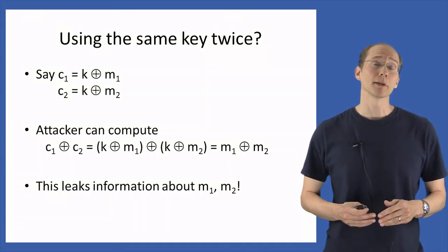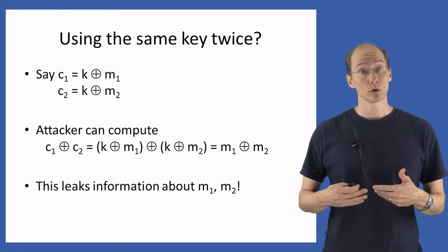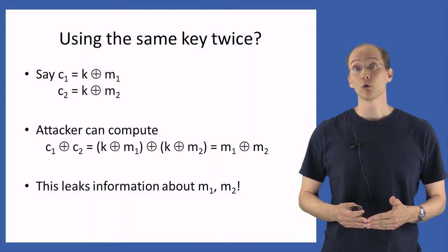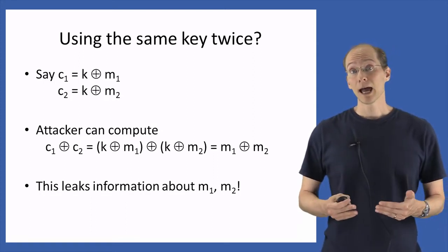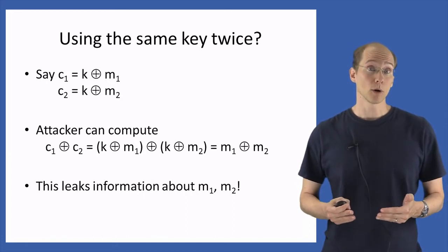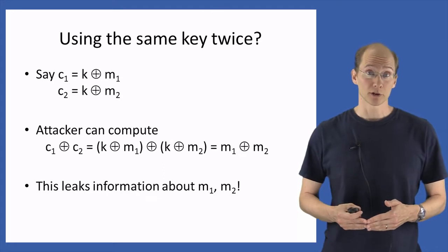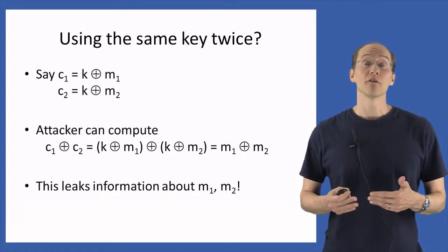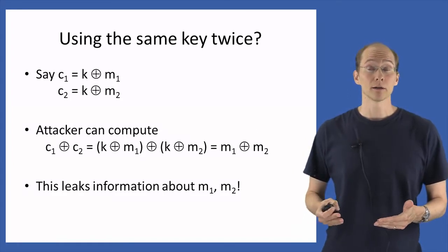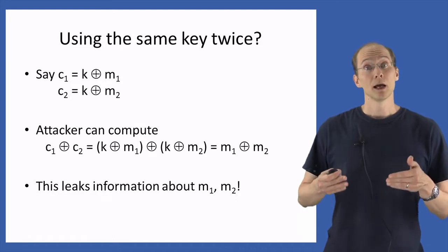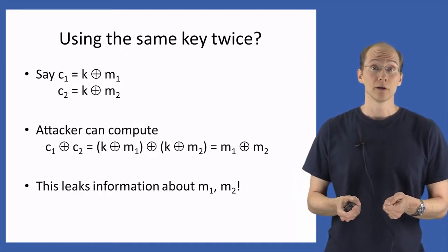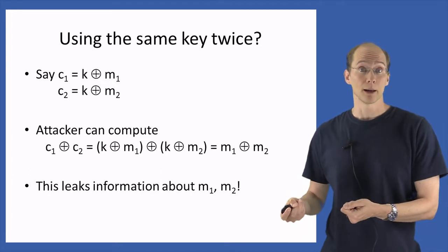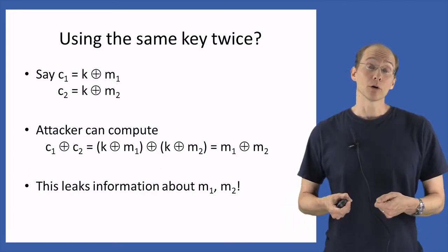I want to look in more detail at the problems that might arise in case the one-time pad is used to encrypt two messages using the same key. So let's say we have two parties who share a key K and use this key to encrypt two messages M1 and M2. An attacker who observes the two ciphertexts C1 and C2 can compute the XOR of those two ciphertexts, and by substitution that XOR is equal to the XOR of M1 and M2. The key K cancels from the resulting expression, and the attacker learns M1 XOR M2.